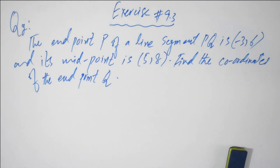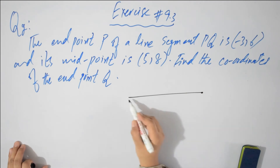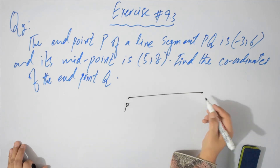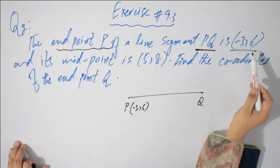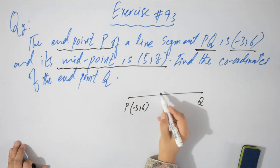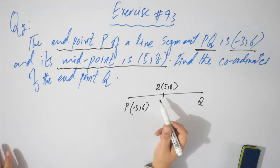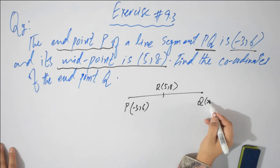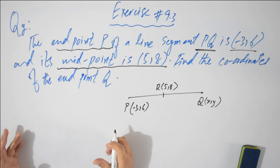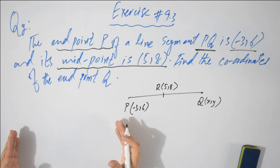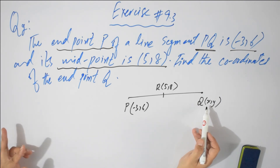In question number 2, students: the end point P of a line segment PQ is given and its midpoint is given — find the coordinates of end point Q. From the figure: end point P of line segment PQ is minus 3 comma 6, midpoint is 5 comma 8, and we need to find end point Q of x comma y. If you compare the statement of this question and the example, both are the same — example number 2 and question number 2 are the same type.